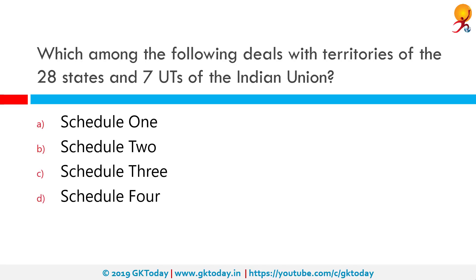Which among the following deals with the territories of the 28 states and seven union territories of the Indian Union? Correct answer is Schedule 1. Article 1 of the Constitution says that India, i.e. Bharat, shall be a union of states, and the territories of India are composed of territories of states, the union territories, and any acquired territories as listed in Schedule 1 under Article 1(3).